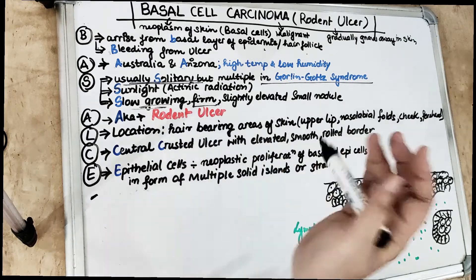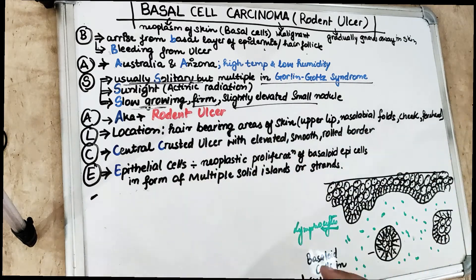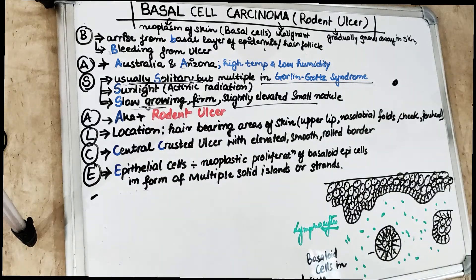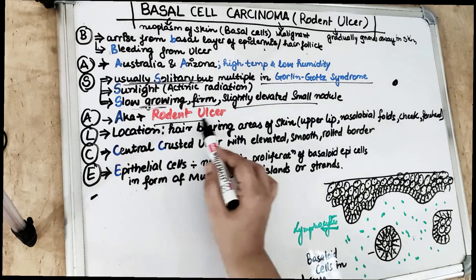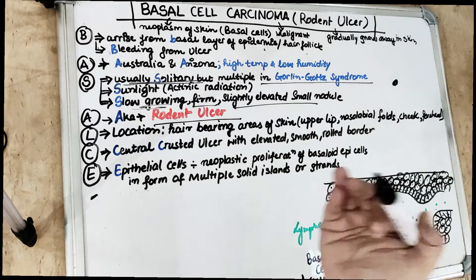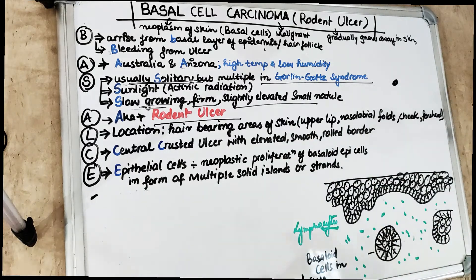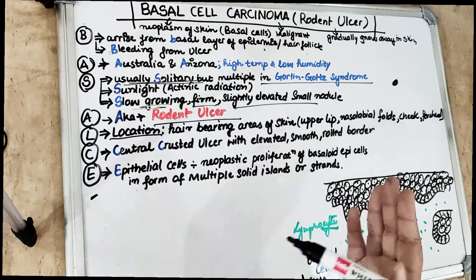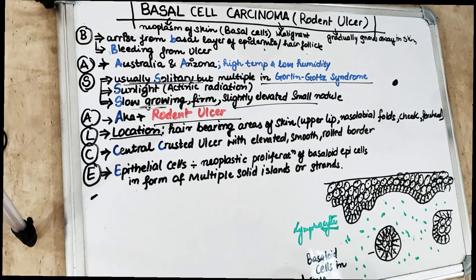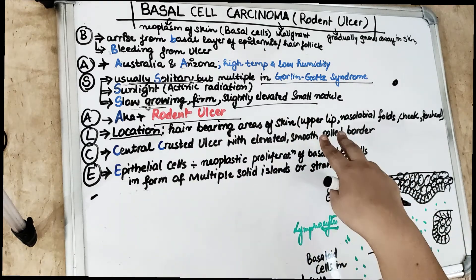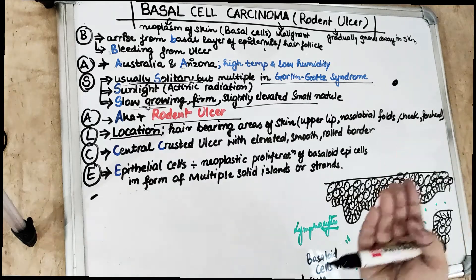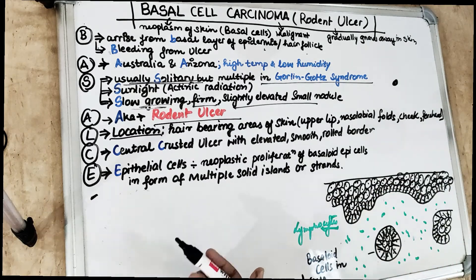It is firm and slightly elevated from the surface, presenting as a small nodule in most cases. Also known as the rodent ulcer, it has the tendency to gradually gnaw away in the skin like a rodent. Location: it is found in hair-bearing areas of the skin. It is rarely seen in the mucosa. Hair-bearing areas of the face include the upper lip, nasal, labial, forehead, and cheek areas.